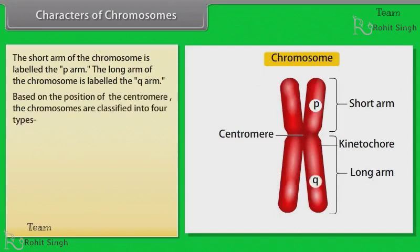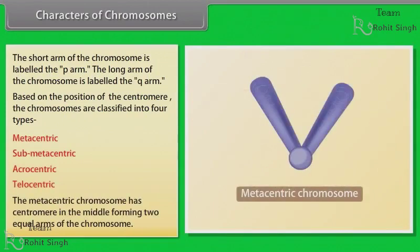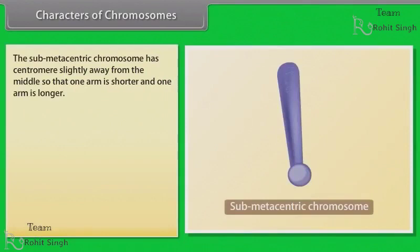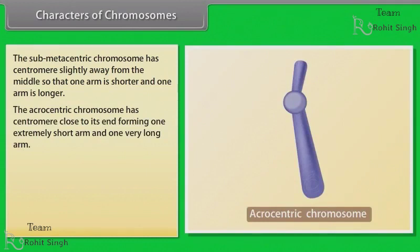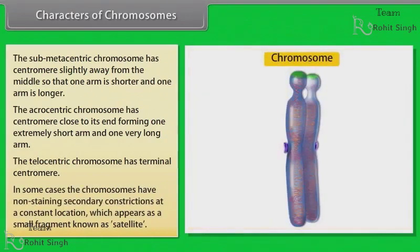The short arm of the chromosome is labeled the P-arm and the long arm is labeled the Q-arm. Based on the position of the centromere, chromosomes are classified into four types: metacentric, submetacentric, acrocentric, and telocentric. The metacentric chromosome has the centromere in the middle, forming two equal arms. The submetacentric chromosome has the centromere slightly away from the middle, so one arm is shorter and one is longer. The acrocentric chromosome has the centromere close to its end, forming one extremely short arm and one very long arm. The telocentric chromosome has a terminal centromere. In some cases, chromosomes have non-staining secondary constrictions at constant locations, which appear as a small fragment known as a satellite.